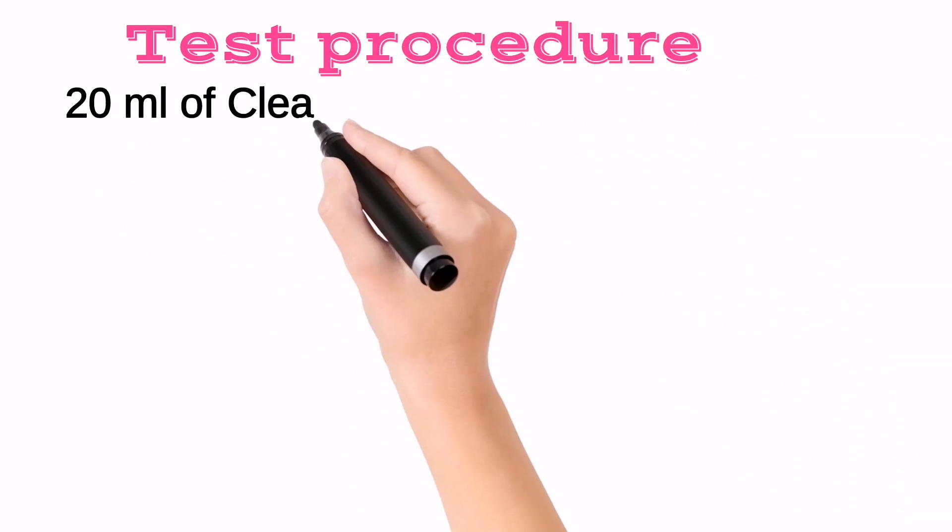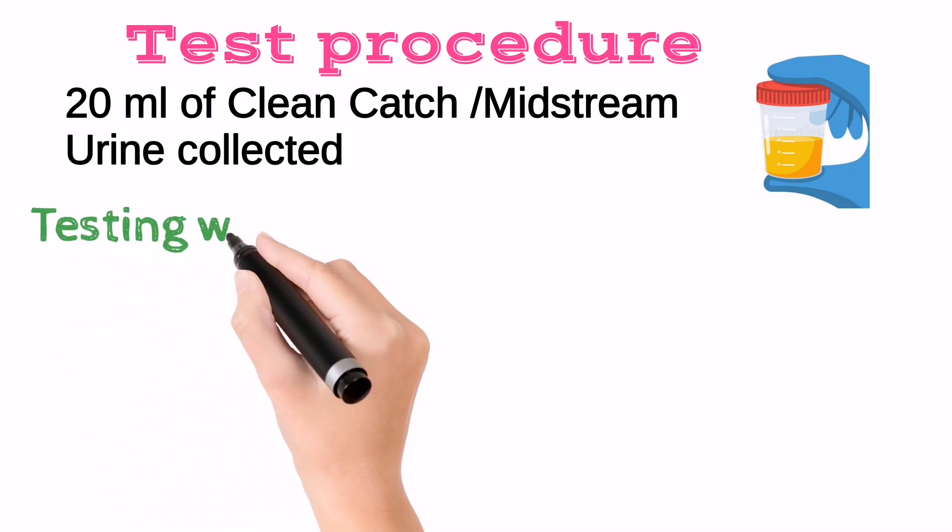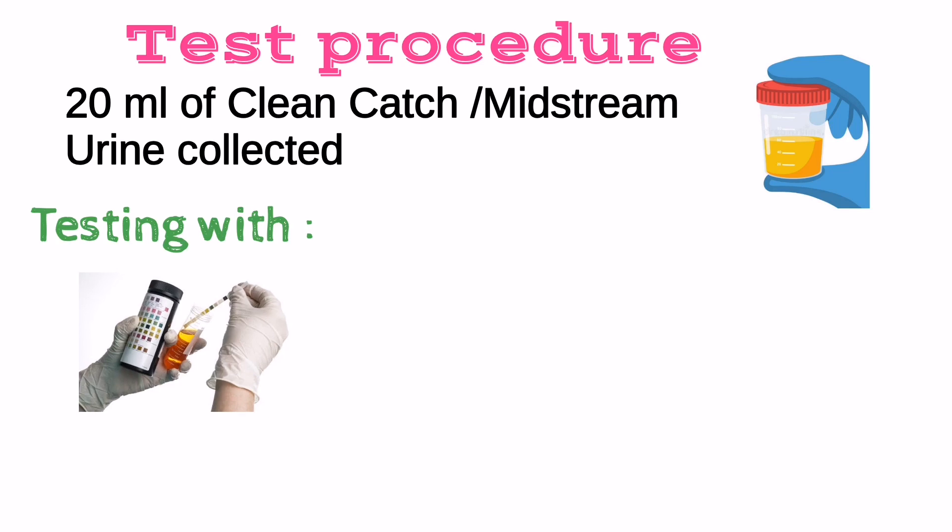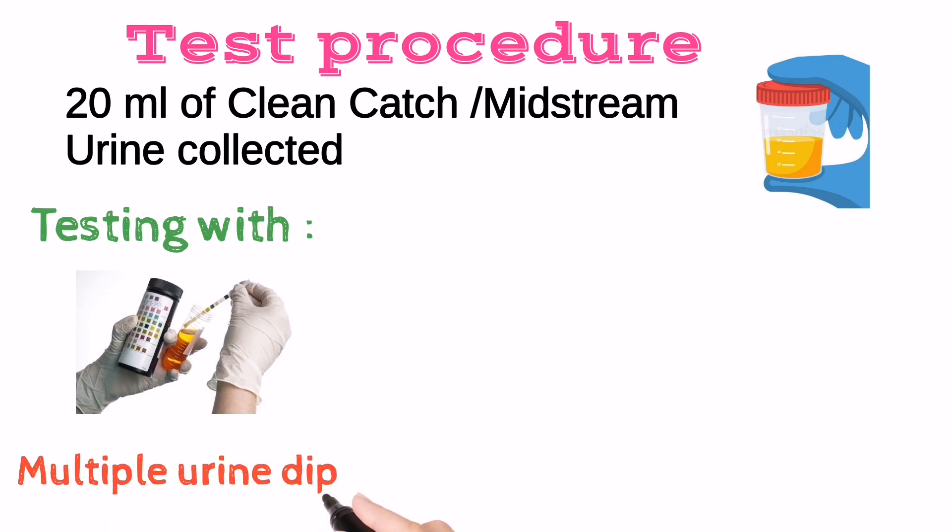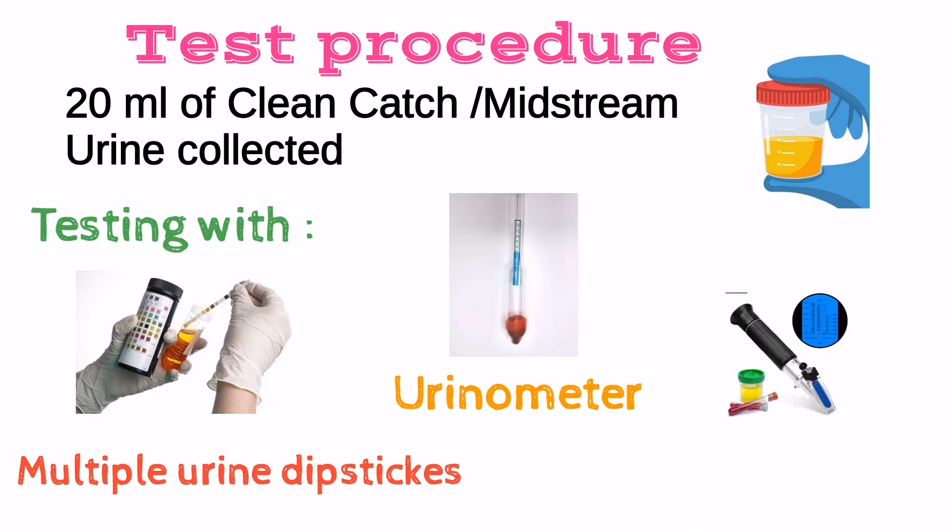For doing USG test, 20 ml of clean catch or midstream urine is needed. The test must be performed with one of the following methods: multiple urine dipsticks, urinometer, and refractometer.